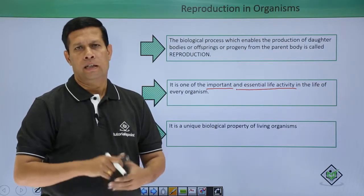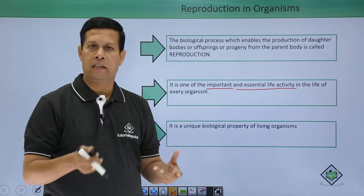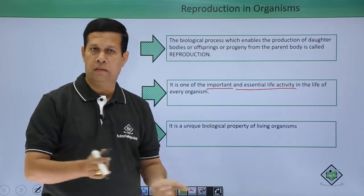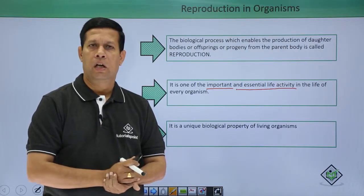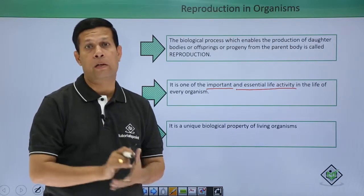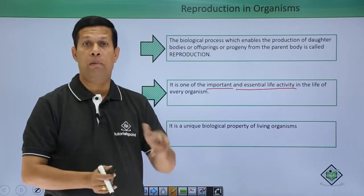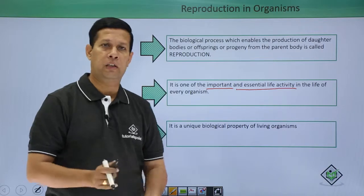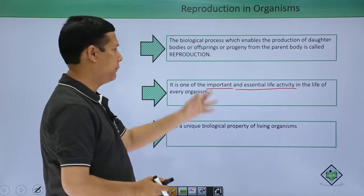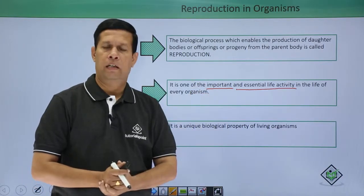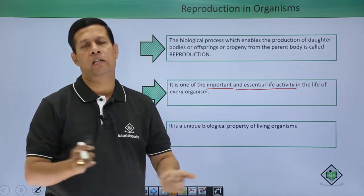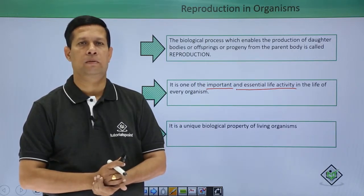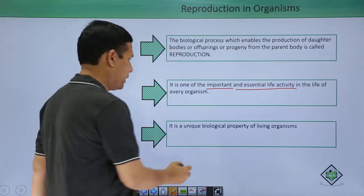Every living organism performs digestion, excretion, circulation, and communication. All these activities are important, and reproduction holds the same importance. That is why reproduction is called an important and essential life activity of living organisms.